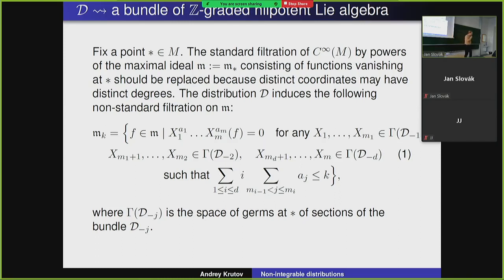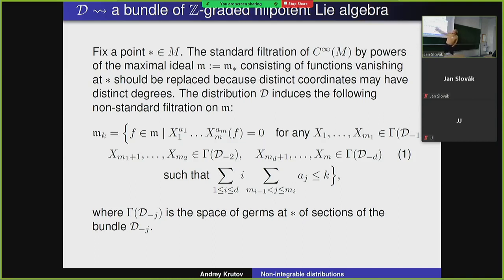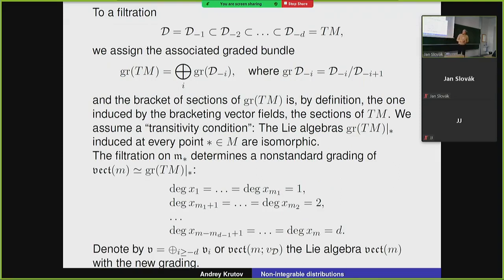We consider functions in our maximal ideal that vanish by the composition of vector fields in a prescribed way. Basically, the vanishing of this expression to a higher degree gives you a filtration. There's a formula where the weights of coefficients a_j depend on which D_i our vector fields belong to. Consider the case when d equals 1 and you will see it's easier. Then this grading — not a grading by filtration — will be our main tool to construct some graded Lie algebra associated to the distribution.